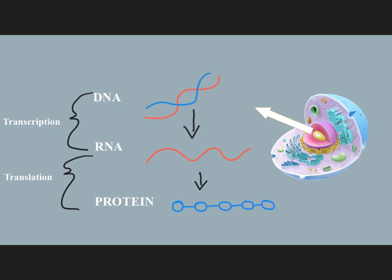These three processes are known as the central dogma of biology, in which we take the instructions from the DNA and convert them into a functional product by going from DNA to RNA to protein.